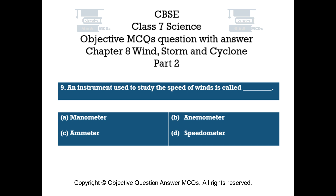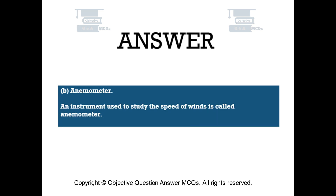Question number 9. An instrument used to measure the speed of winds is called — Option A: manometer. Option B: anemometer. Option C: ammeter. Option D: speedometer. The right answer is Option B: anemometer. An instrument used to measure the speed of winds is called an anemometer.